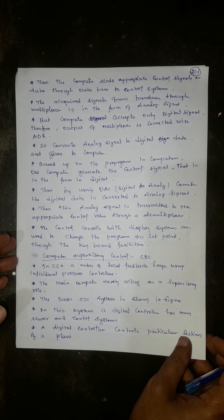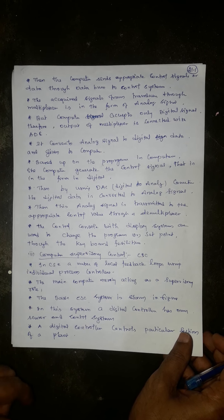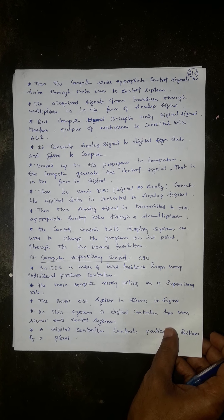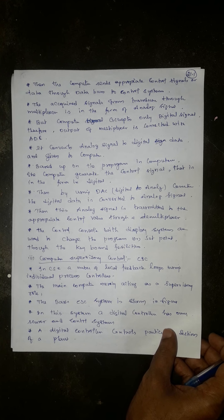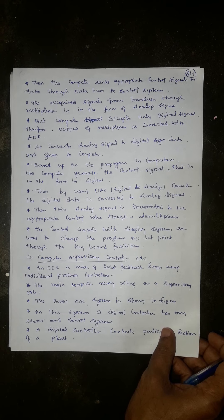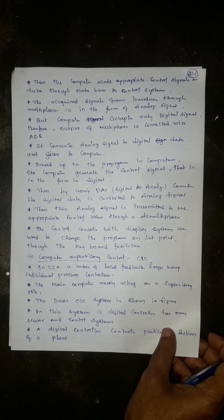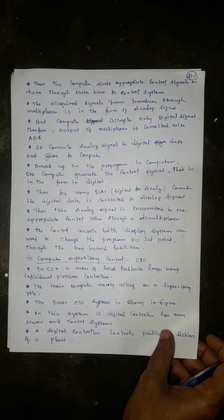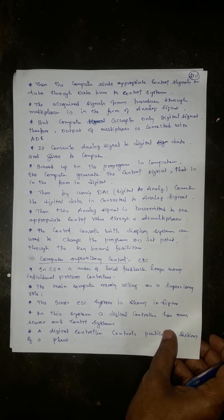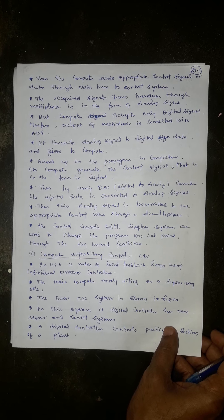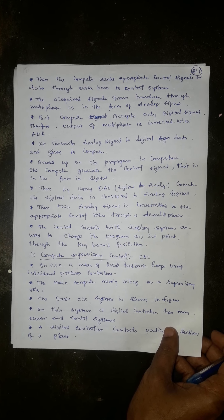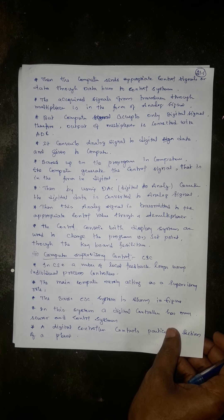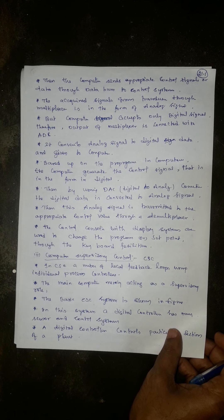The computer sends the appropriate control signal through a data bus to the control system. The signal from the transducers through the multiplexer is in the form of an analog signal. Since the computer accepts only digital data, the output of the multiplexer is connected to an ADC — an analog-to-digital converter — which converts the analog signal to digital data and feeds it to the computer.